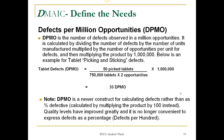DPMO is a newer construction for calculating defects rather than as percent defective, which is calculated by multiplying by 100 instead of one million. Quality levels have improved enormously over the years, and it's no longer convenient to express defects as a percentage — defects per 100 — which is how it was done 40 years ago at the start of this instructor's career.